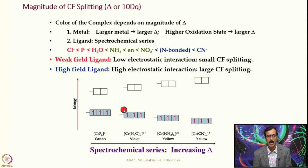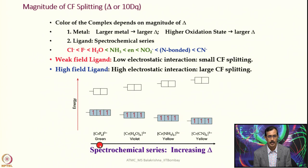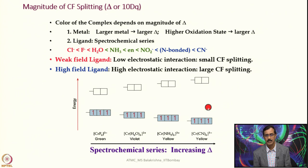Weak field ligands have low electrostatic interaction, resulting in small crystal field splitting. High field ligands have high electrostatic interaction, resulting in large crystal field splitting. This is the origin of the spectrochemical series. You can see here that for octahedral chromium(III) complexes where only the ligands have been changed — from fluoride to water, water to ammonia, ammonia to cyanide — the color changes from green to violet to yellow, and the CFSE separation is steadily increasing. This clearly shows that cyano complexes are much more stable compared to fluoro or halo complexes in general.